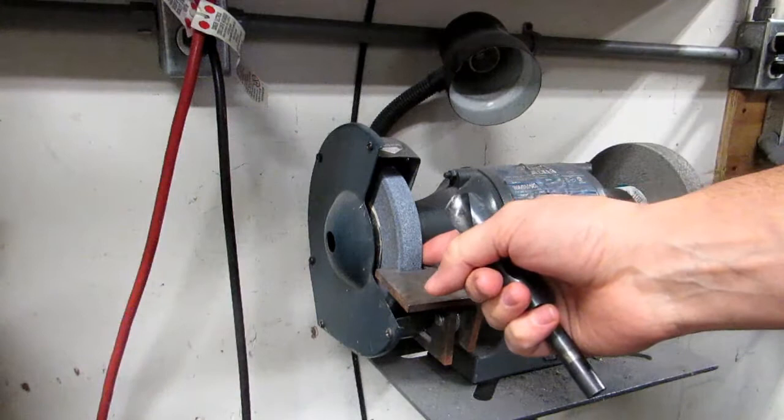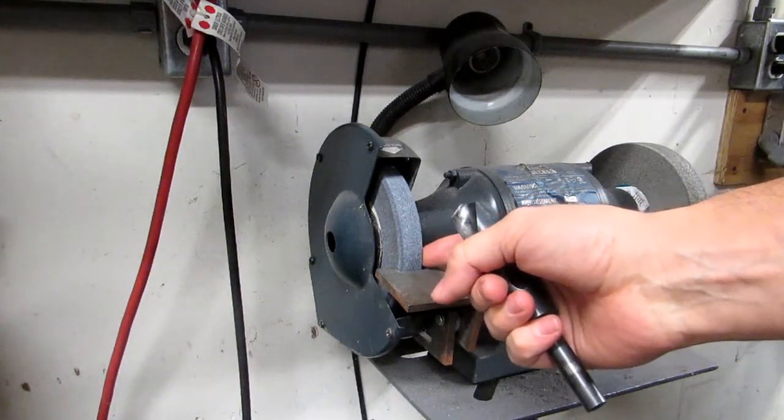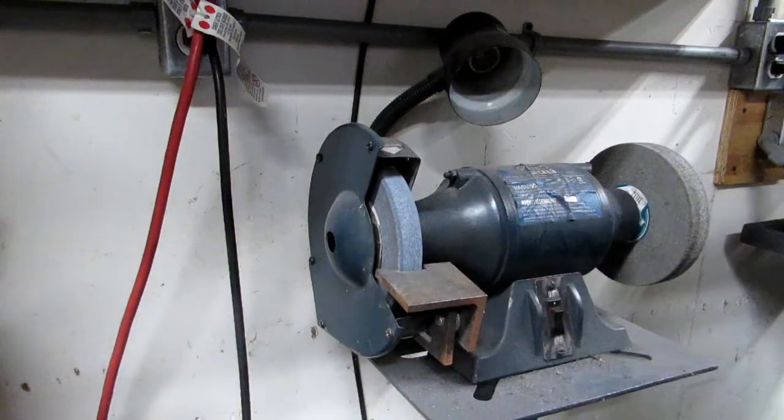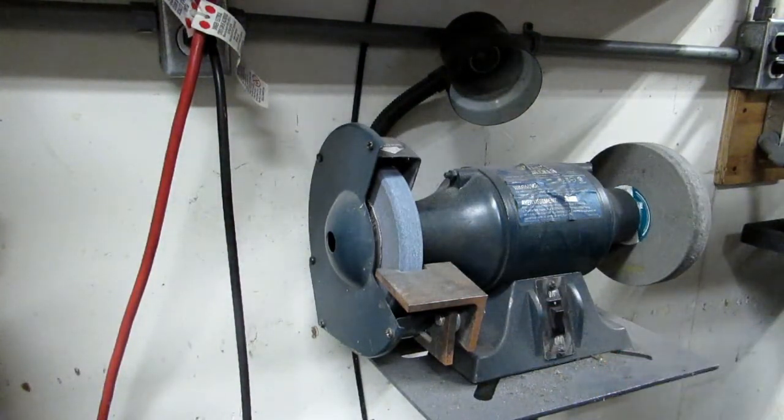We are going to be using the side of the wheel, which you normally wouldn't want to put a lot of pressure on. You can cause the wheel to break if you do that. So it's just going to be a really light touch, and we're going to put as small a flat on it as we can.